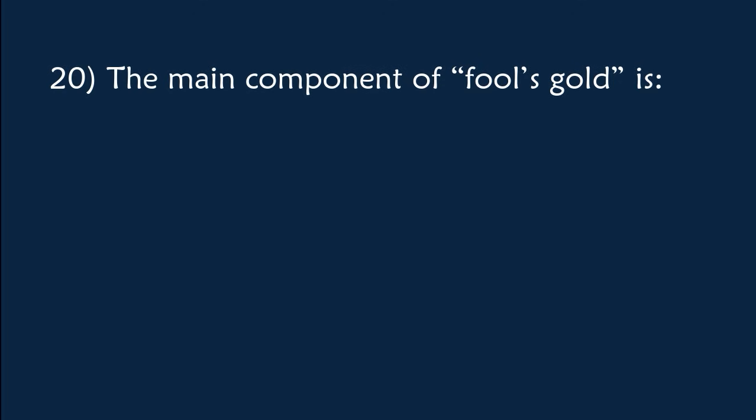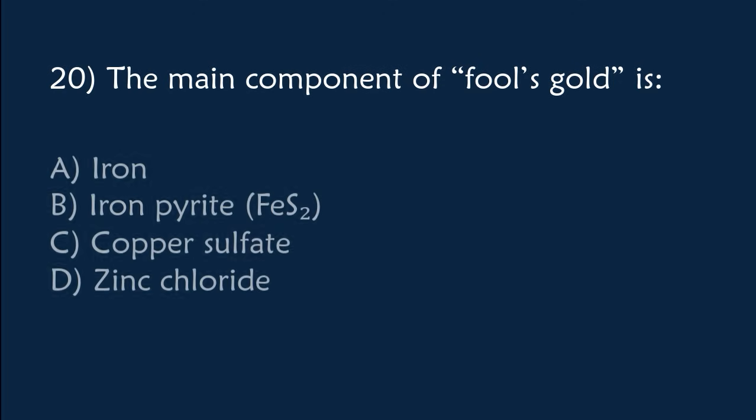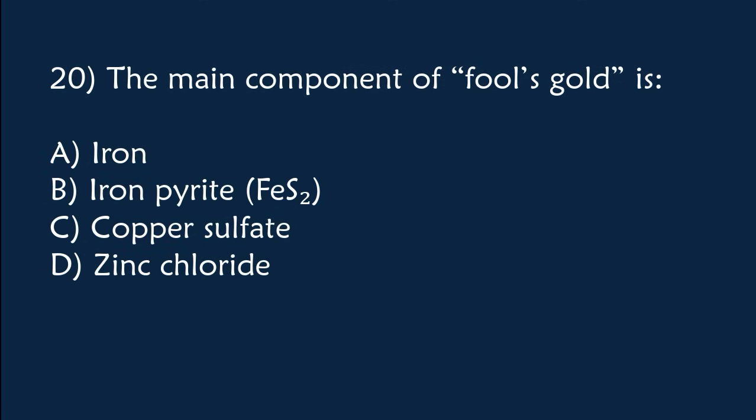The main component of fool's gold is: A) Iron, B) Iron pyrite, C) Copper sulfate, D) Zinc chloride. The correct answer is Option B, iron pyrite.